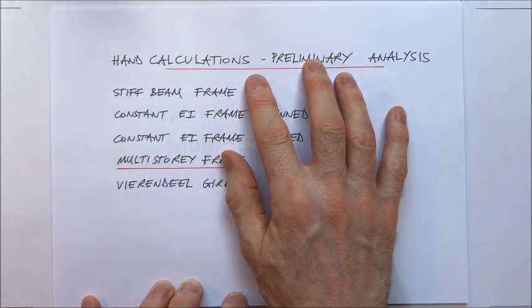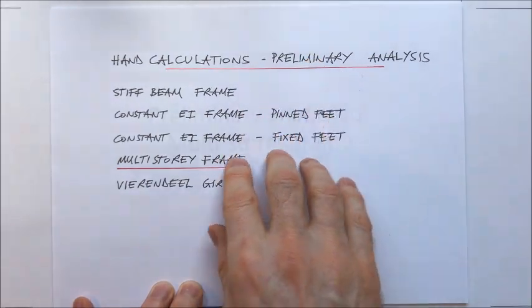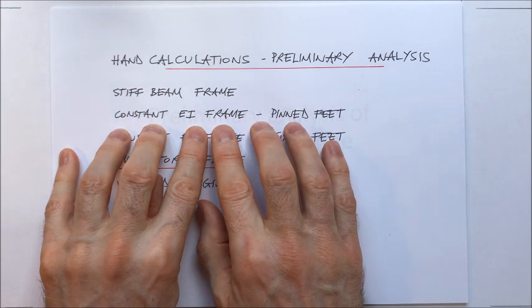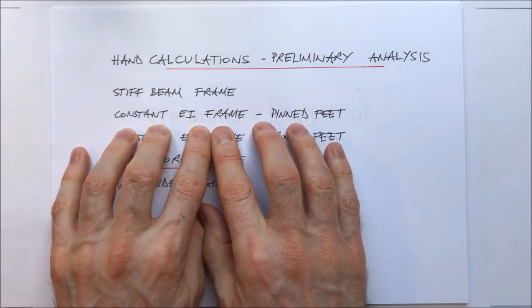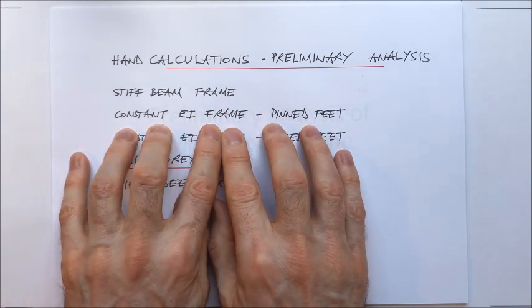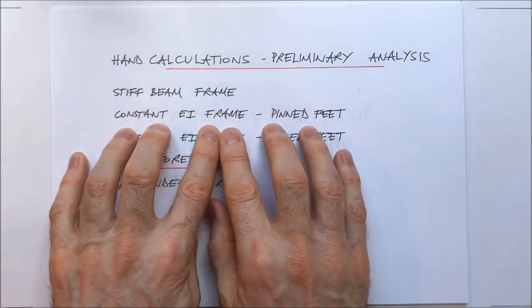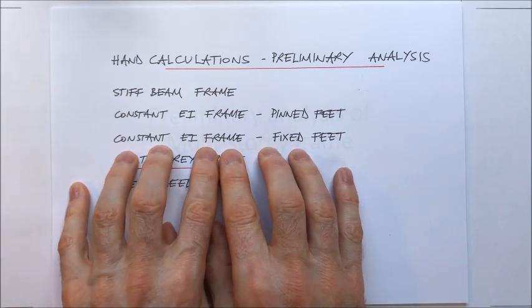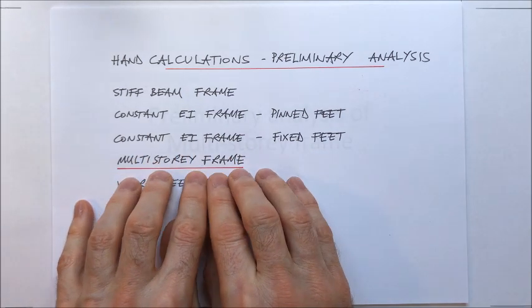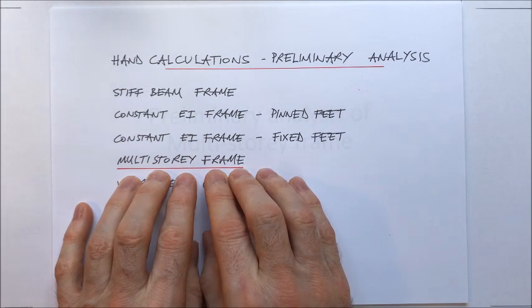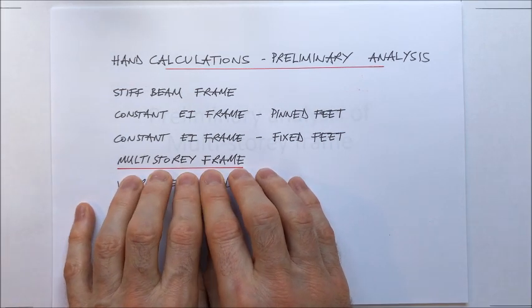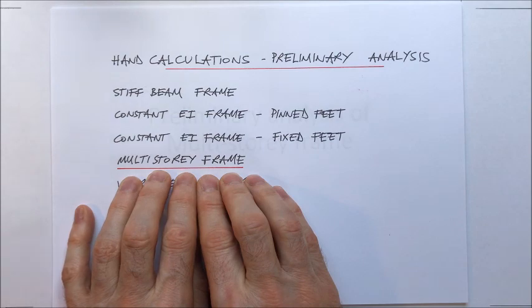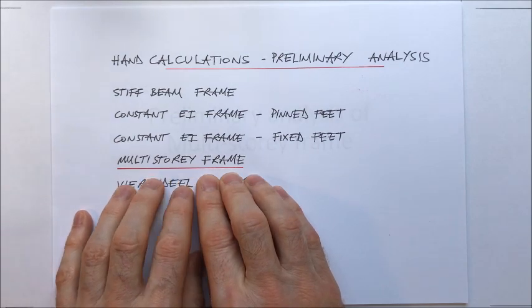This is what we've done so far in the other videos. We looked at a stiff beam frame, just single-storey, and then a frame with constant EI, again single-storey but with pinned feet, and then a constant EI frame with fixed feet. And then in the last video we looked at a two-storey frame, a single bay two-storey frame. In this video we're going to look at multi-storey frames.